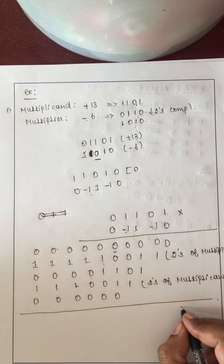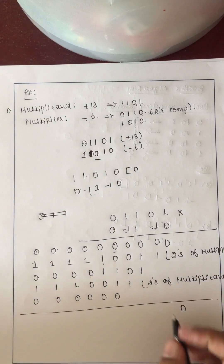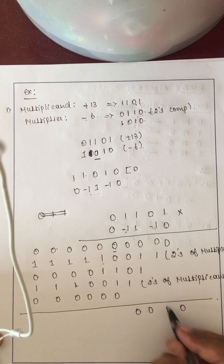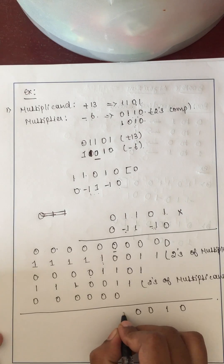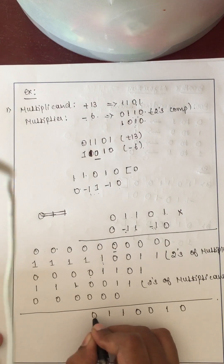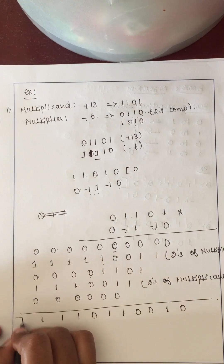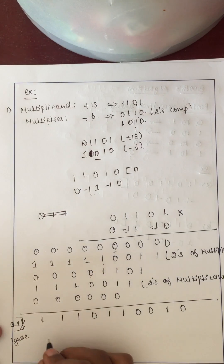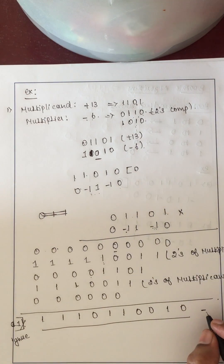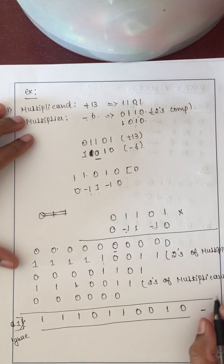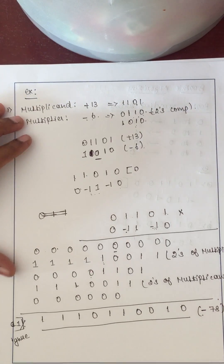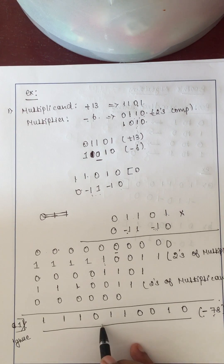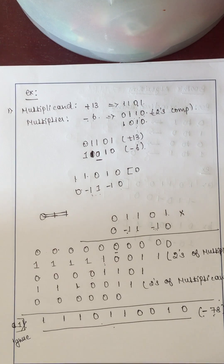Adding all the partial products gives the result: 1 0 0 0 1 0 0 1 1 0 1 1, with a carry of 1 that can be ignored. This is the final product. The expected result of +13 × -6 is -78. Identify the binary value of 78, take its 2's complement, and that is the binary value of -78, which should match.